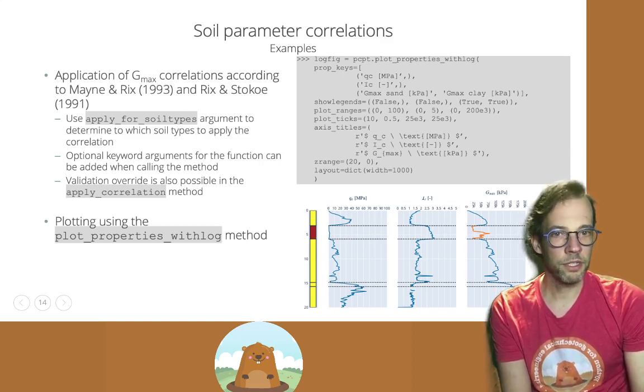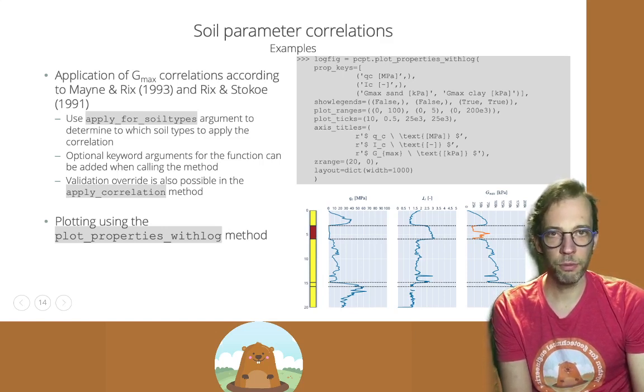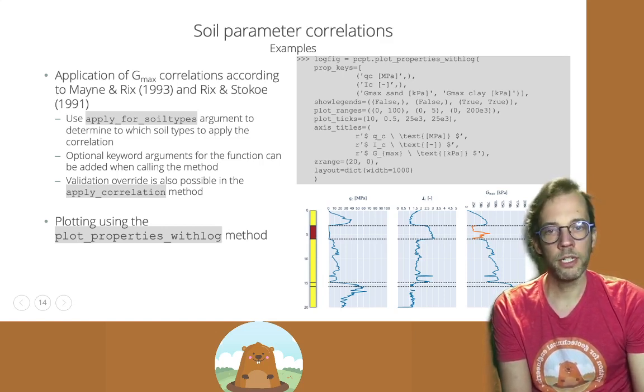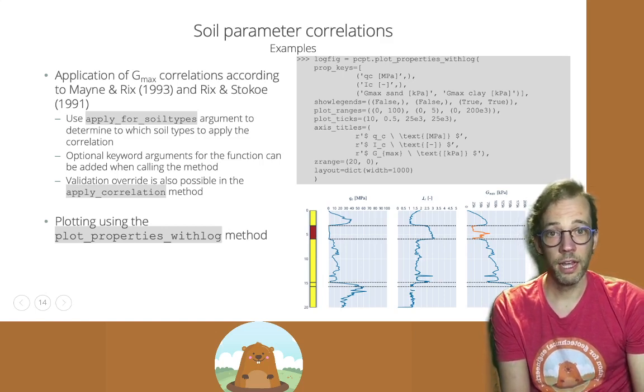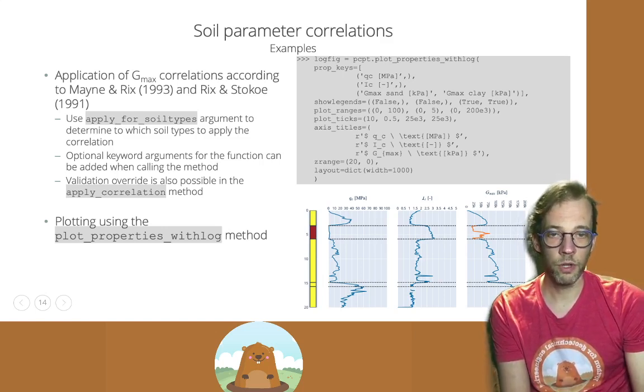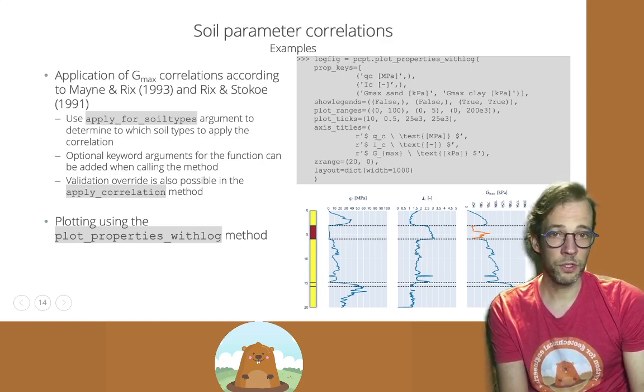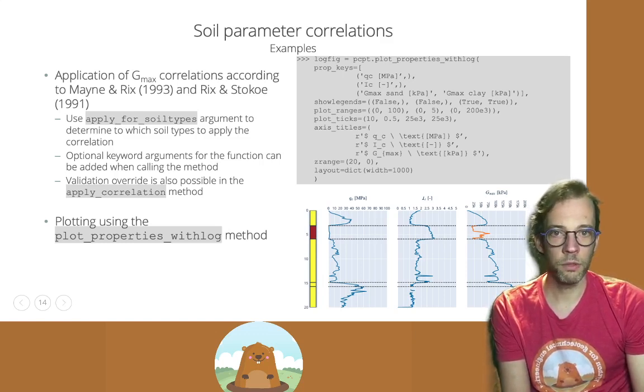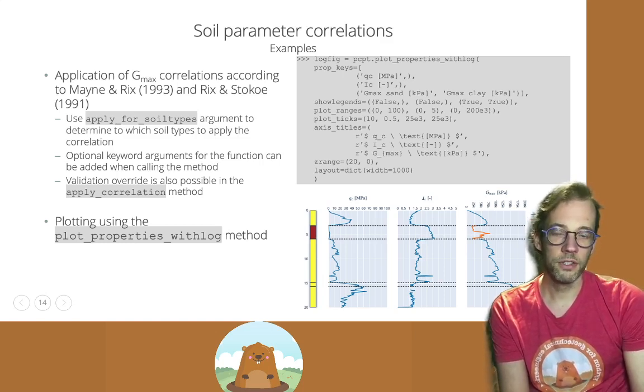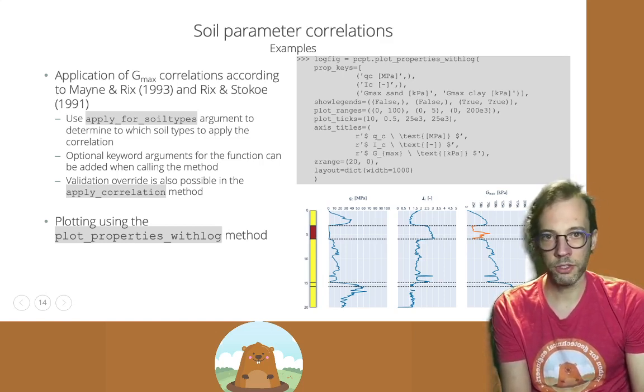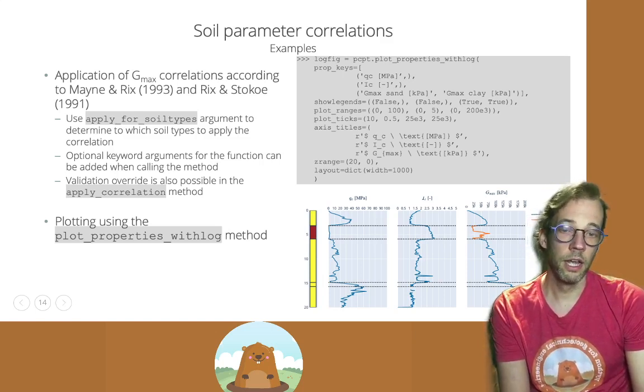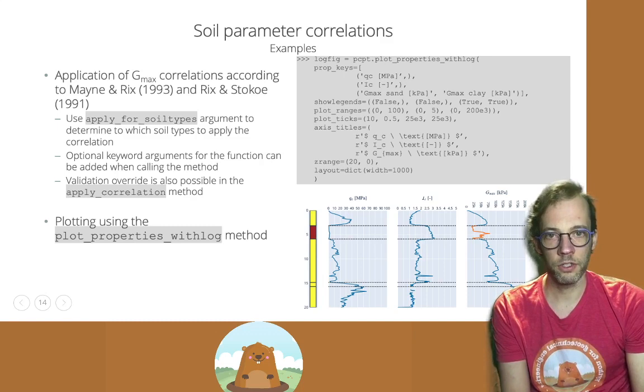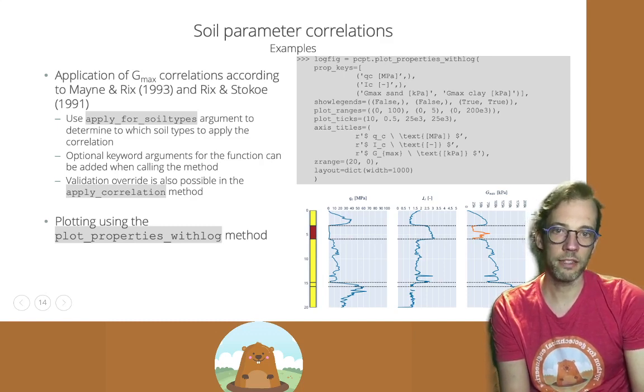We need to specify which property keys we want to plot in each panel. We need to say whether we want to display the legend or not. And then define ranges for each panel and axis titles as well. And we can also specify some optional layout arguments to further customize the plot.